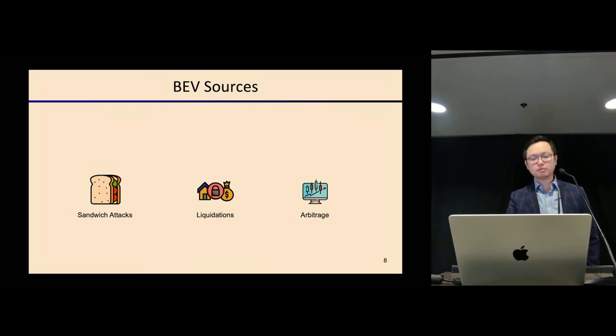In the paper, we looked at three different BEV resources: sandwich attacks, liquidation, and arbitrage. Liquidation and arbitrage are also common market activities in traditional finance. Sandwich attack is a bit different from the other two, but I don't have enough time to go through in details. If you're interested, I welcome you to our poster session later to discuss sandwich attacks.